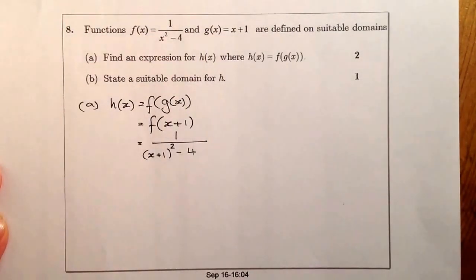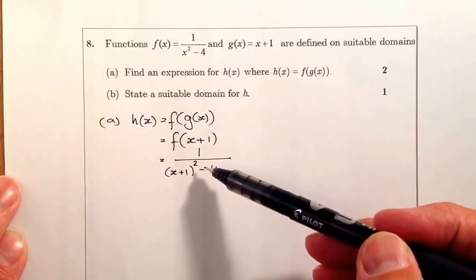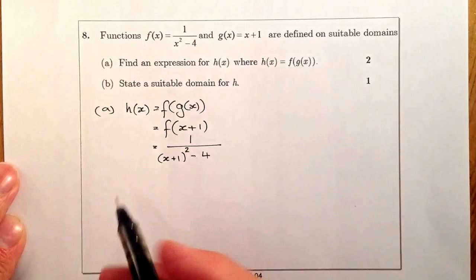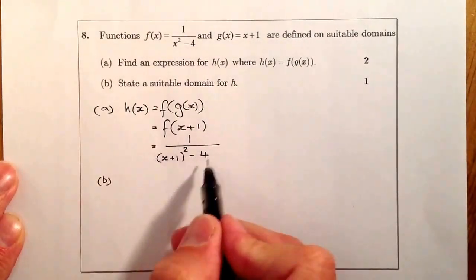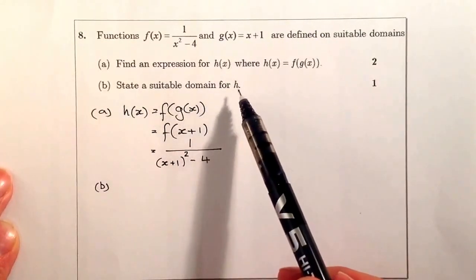So from there I would expect that there's going to be the 2 marks. I've got an expression here for it. So I'm going to go ahead and do part B, and I'm going to continue on from here, because I have to state a suitable domain for h.